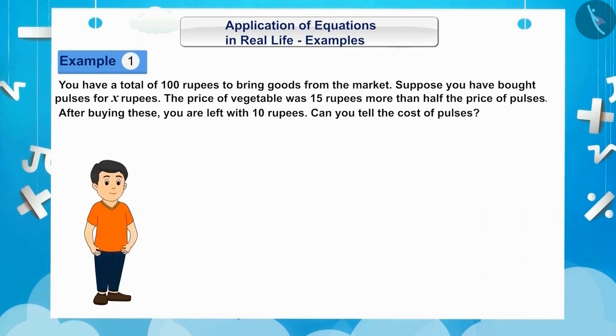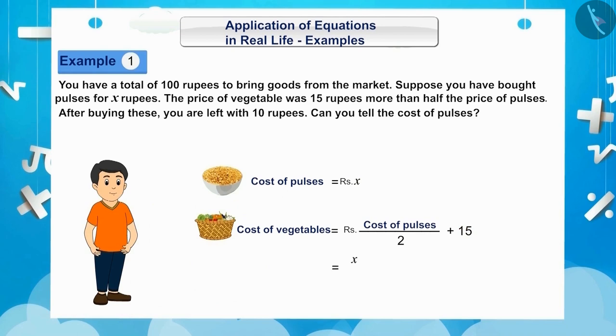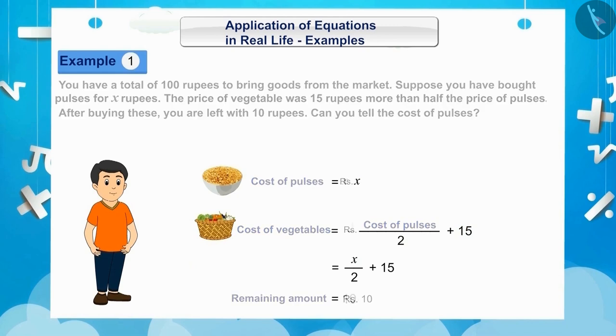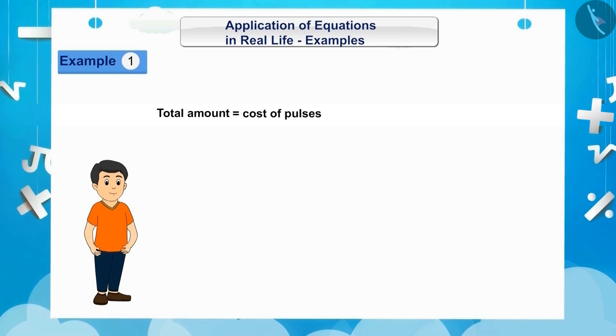Given that the cost of pulses is X rupees, the cost of vegetables is 15 more than half the cost of pulses, which is X by 2 plus 15. And we are left with 10 rupees. We know that the total amount is equal to cost of pulses plus cost of vegetables plus the remaining amount. Therefore, our equation will be 100 is equal to X plus X by 2 plus 15 plus 10.